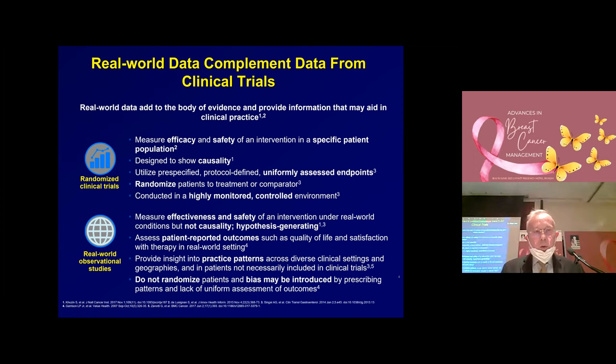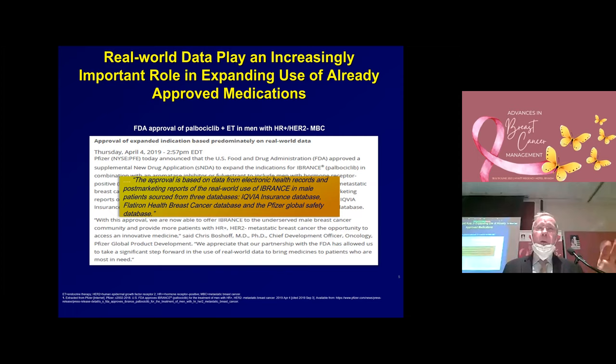We can even look at specific groups — for instance, male patients. Male patients are never included in prospective phase three trials; it's a criterion of exclusion because the numbers are very small. On a large scale it's interesting to look at these small groups, and they have shown that in males the efficacy is about the same, comparable to females — which is very interesting, because initially we had no idea what it would do in male patients.